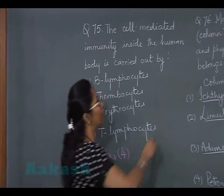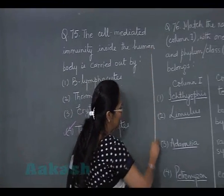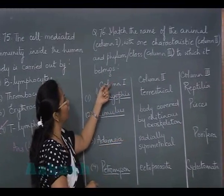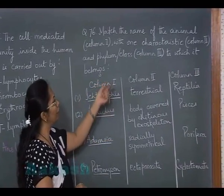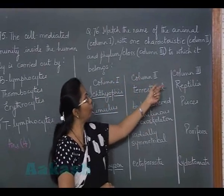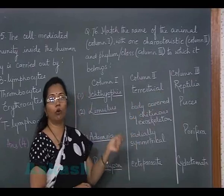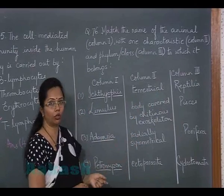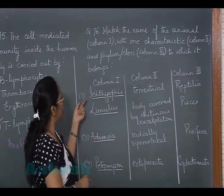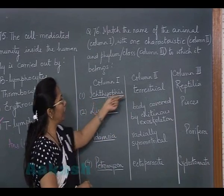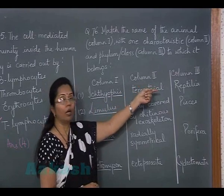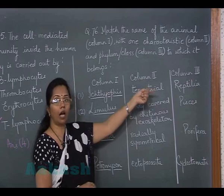In question number 76, there are three columns: column 1 has the animal name, column 2 has a characteristic feature, and column 3 has the phylum or class. We must choose the correct option. The first option — Ichthyophis is terrestrial (correct), but classifying it under Reptilia is wrong; it is an amphibian.